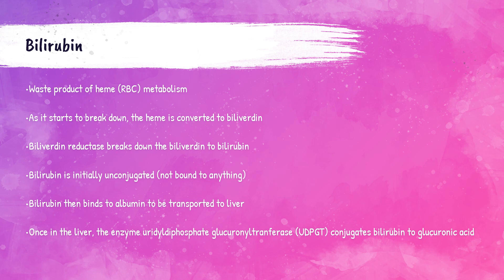Bilirubin is formed from the breakdown of red blood cells. Red blood cells break down in the spleen, bone marrow, and liver. The porphyrin ring from the breakdown of the hemoglobin is converted to biliverdin. An enzyme called bilirubin reductase then breaks down this biliverdin to bilirubin. At first, this bilirubin is unconjugated — meaning it's not bound to anything. Also called indirect bilirubin, the unconjugated bilirubin accounts for around 80% of the total bilirubin in the body.